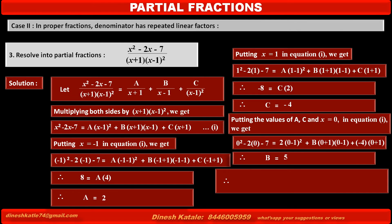Therefore, the given fraction (x²-2x-7) / [(x+1)(x-1)²] = 2/(x+1) + 5/(x-1) - 4/(x-1)².